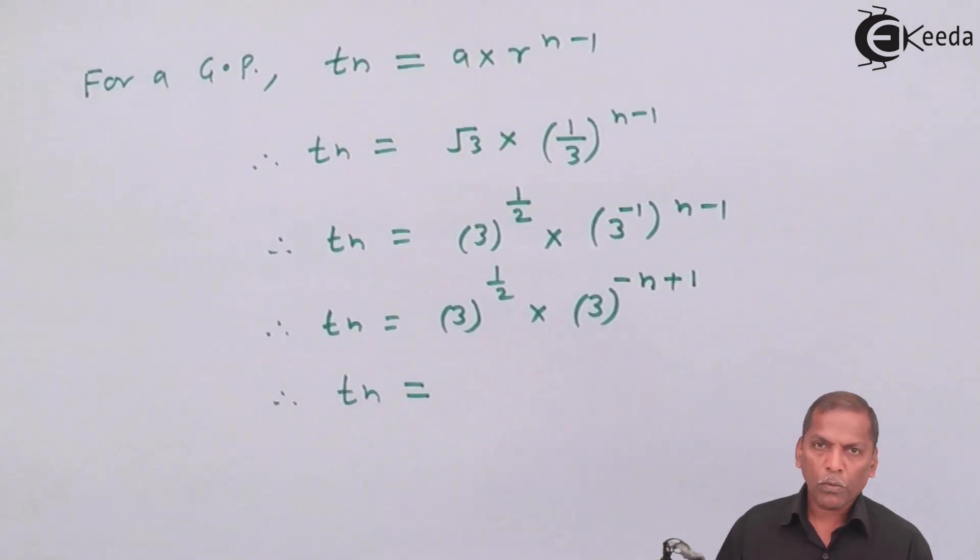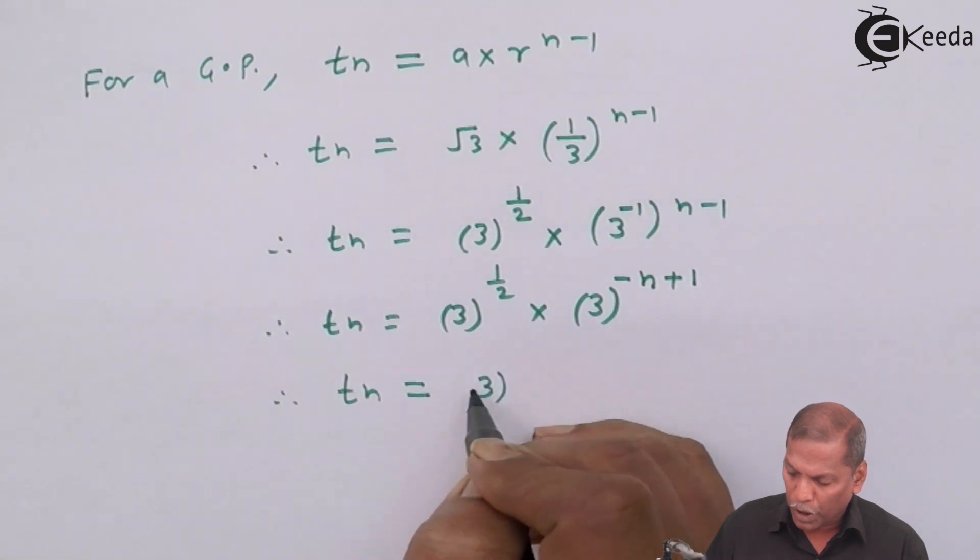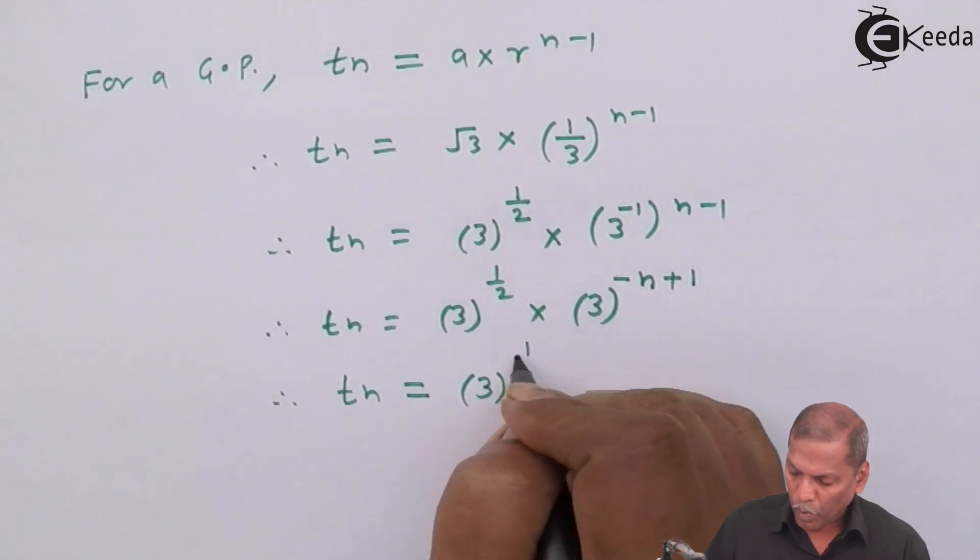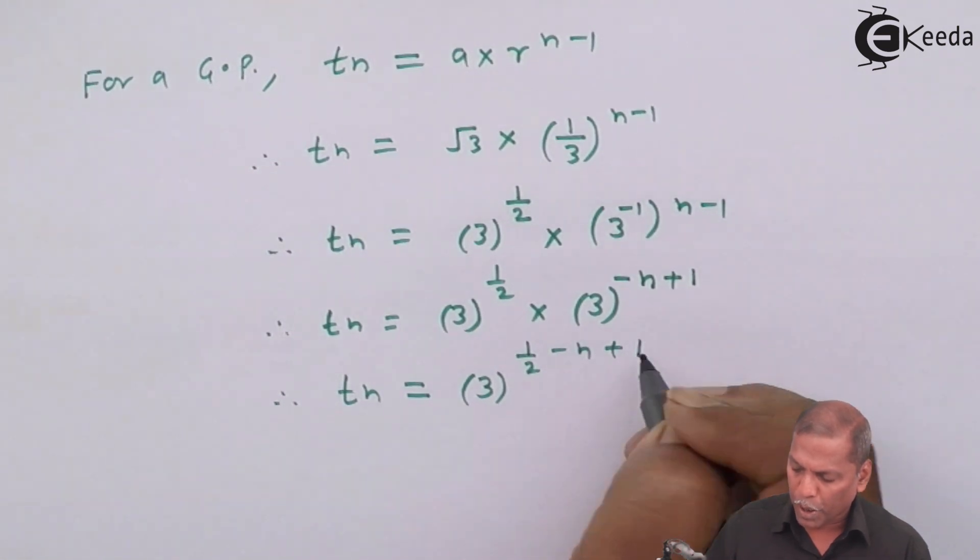So Tn equals 3 raised to 1 by 2 minus n plus 1.